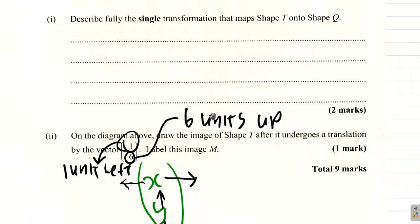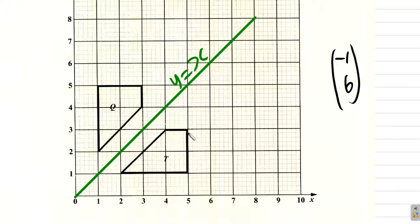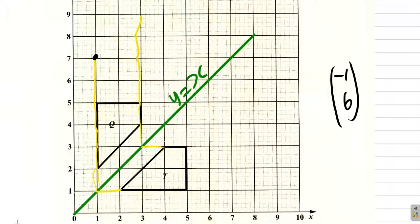What they want you to do is find the image of T and call it M. Every point on T will move. This point — 1 to the left and 1, 2, 3, 4, 5, 6 up — will end up here. This next point moves 1 to the left and 1, 2, 3, 4, 5, 6 up, ending up here. This point goes 1 to the left and 1, 2, 3, 4, 5, 6 up, ending up here.